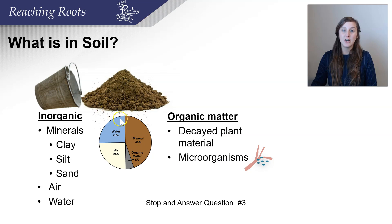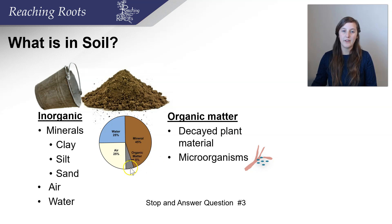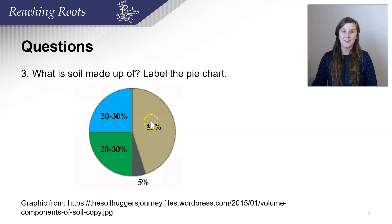On average, 25% of the space of soil needs to be water — plants need that water to grow. Another 25% of the space needs to be air, which is incredibly important for the roots to perform cellular respiration. The other component is minerals, which house the nutrients of the soil. And a small percentage, around 5%, is organic matter, which plays critical roles and includes the microorganisms that help plants grow. Now you have the tools to answer question 3: what is soil made up of? Label the pie chart.